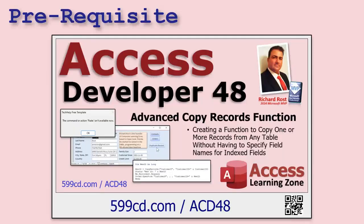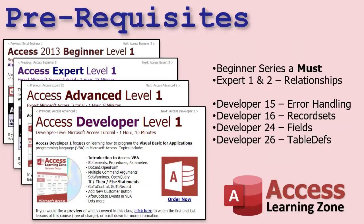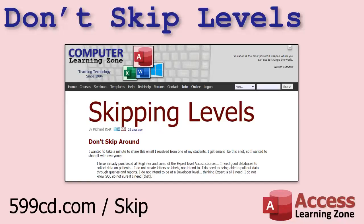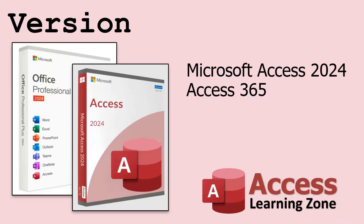This lesson follows Access Developer 48. Do you have to have watched 48? Not really. I mean, once we get up to this level, there is some core stuff you really should know — definitely the beginner and expert material, Developer 15 error handling, 16 record sets, table definitions are important. These are designed so that I assume you understand everything from the previous ones. But if you come across a topic you don't know, you can always look it up on the website and find out what other lesson covers it. Or just don't skip levels. It is currently March of 2025, and I'm using an Access 365 subscription. My version of Access is roughly equivalent to Access 2024. Get a subscription — it's about eight bucks a month and it's worth it if you're running your business on Access.